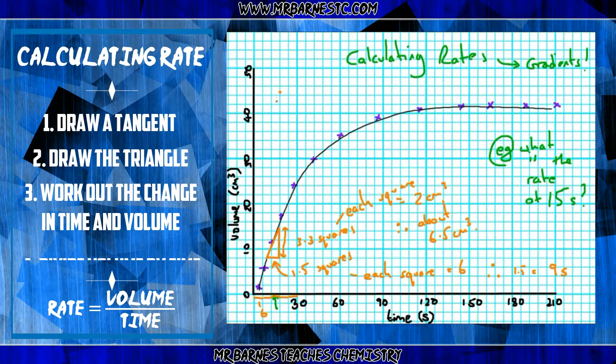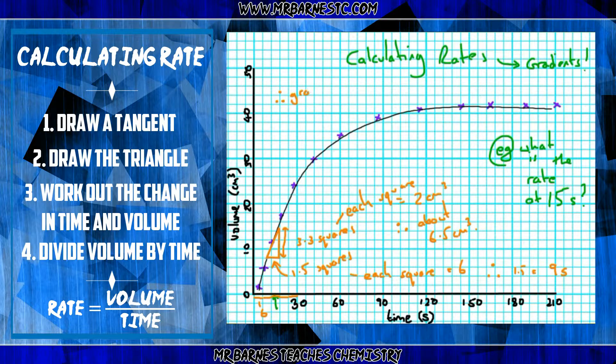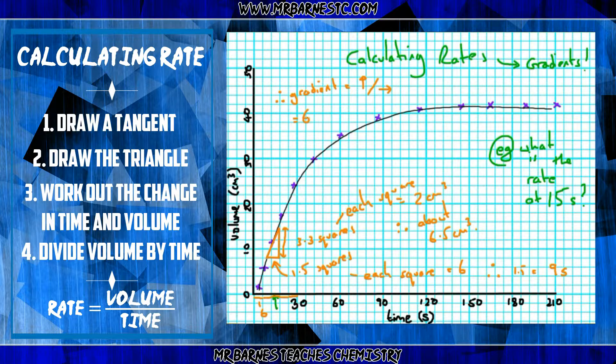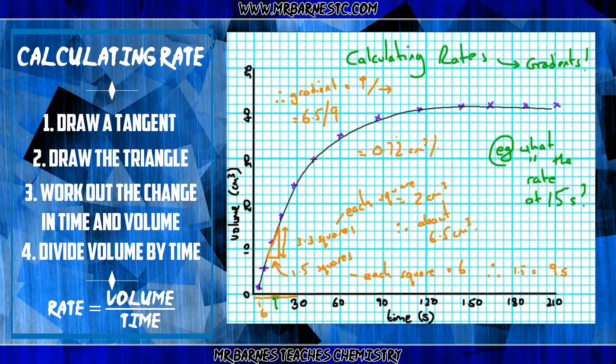Now, as I've said, to work out the rate, all you have to do is take the height divided by base, which in this case is the volume divided by time. So, it's going to be 6.5 divided by 9, which is 0.72 centimeters cubed per second.